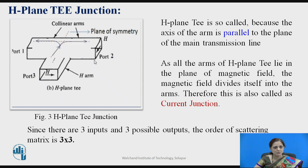Here there are three ports. If the input is applied to port 3, that is to the H-Arm, then whatever microwave energy is input equally divides into port 1 and port 2. H-Plane T-Junction has three ports, that is three inputs and three possible outputs, and therefore for defining the scattering matrix for H-Plane T, we can define it with order 3 by 3.